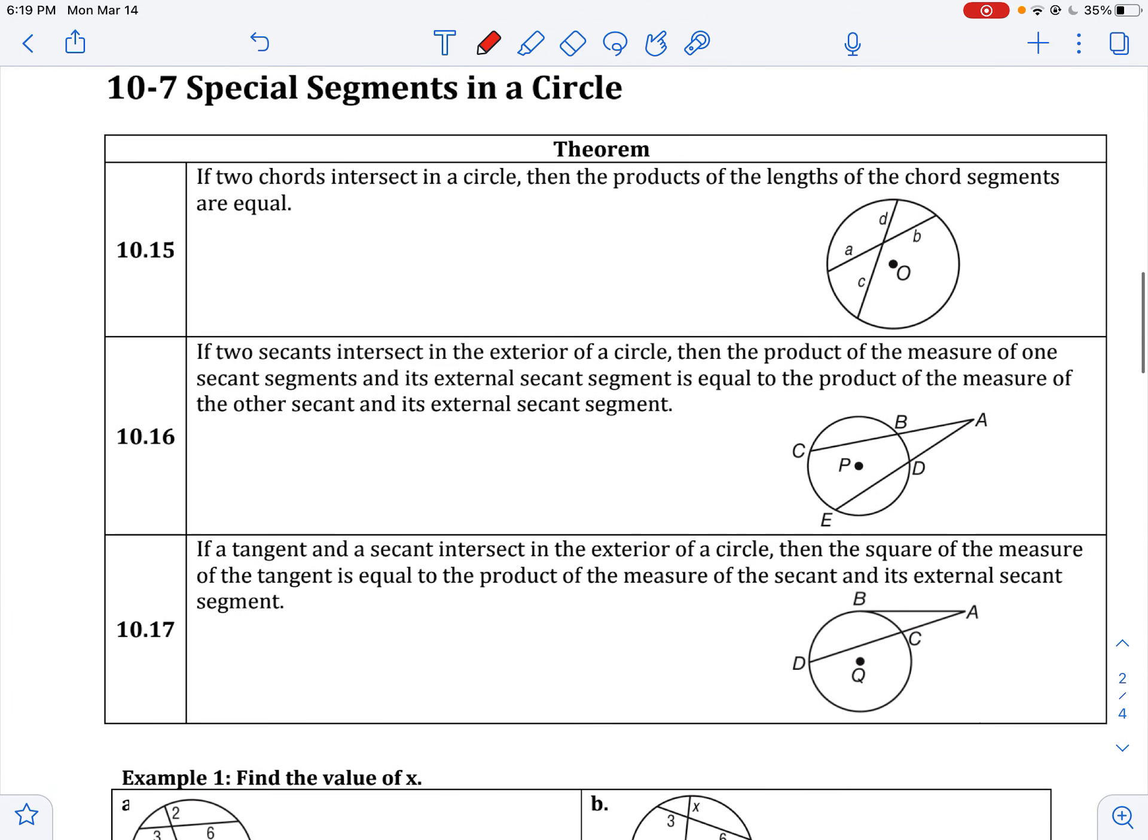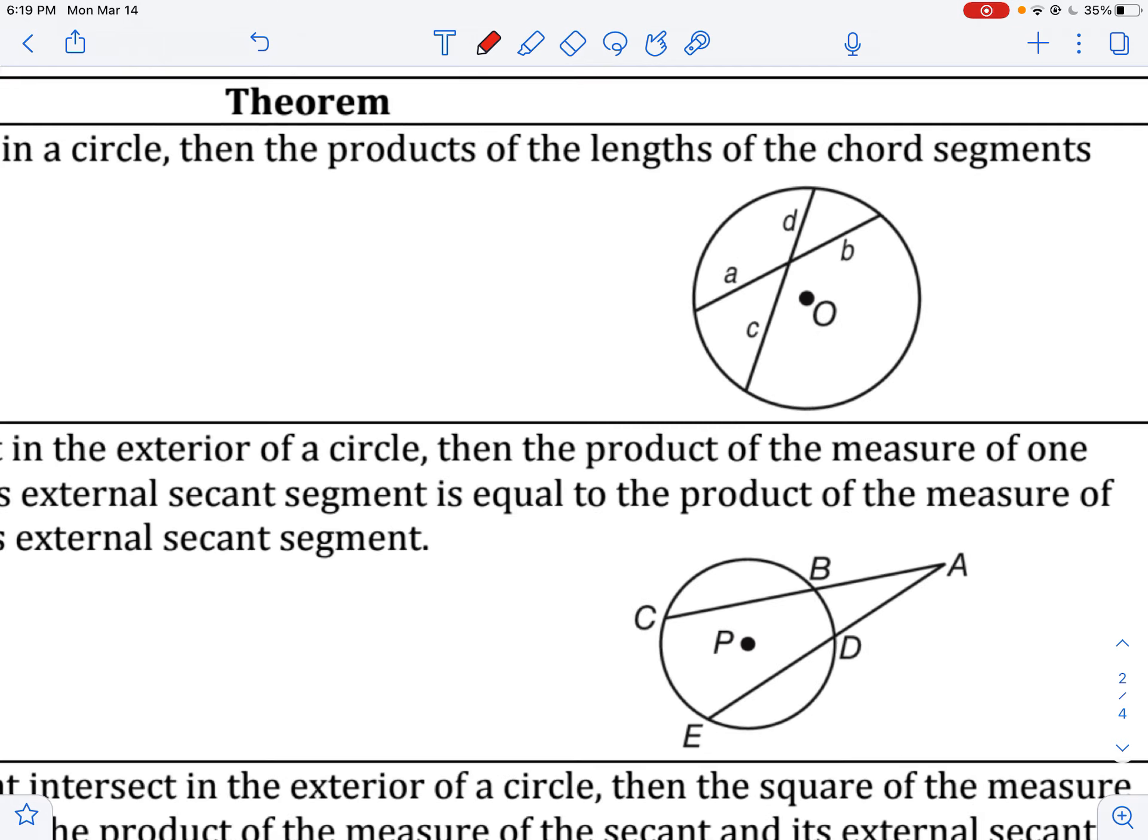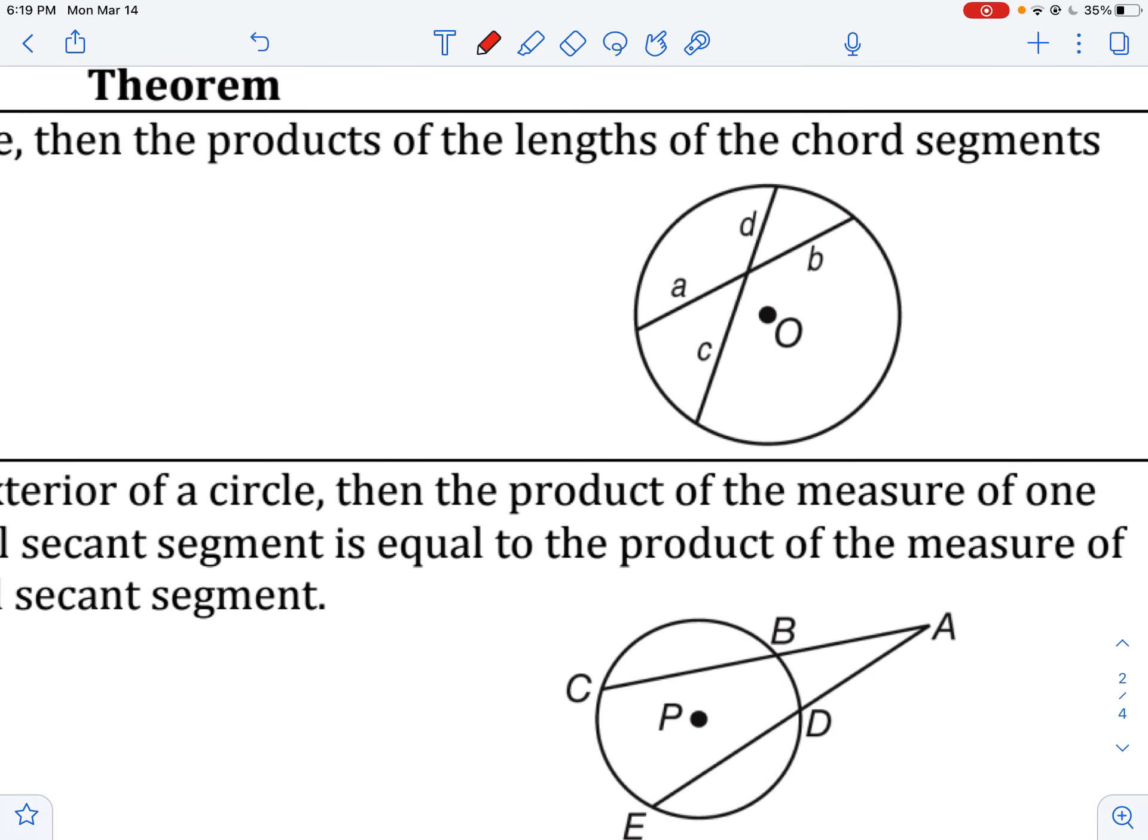Now the new material is our special segments in a circle. If two chords intersect in a circle, then the products of the lengths of that chord, of one chord, would be equal to the products of the length of another chord. Well, what does that mean? That means that A times B would be equal to C times D.